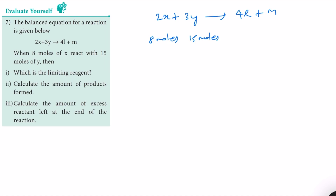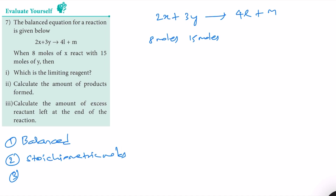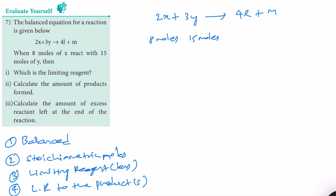In solving these kinds of problems, you need to follow four steps. First, check whether the reaction is balanced — the question already states it is a balanced equation, so we don't have to worry about that. Second, write down the stoichiometric moles. Third, identify the limiting reagent — whichever ratio is less is the limiting reagent, which limits further reaction. Fourth, compare the limiting reagent to the product or products.